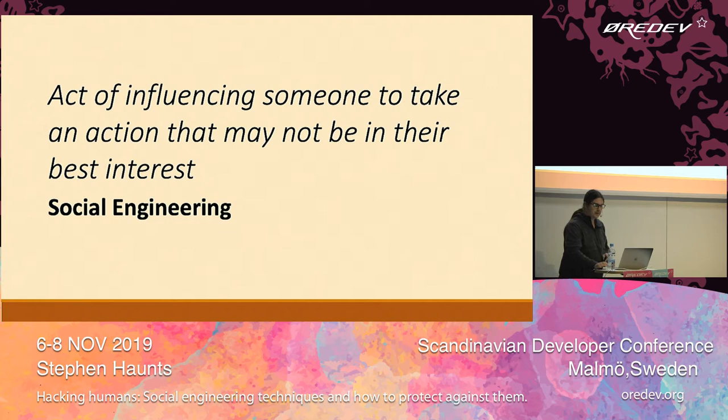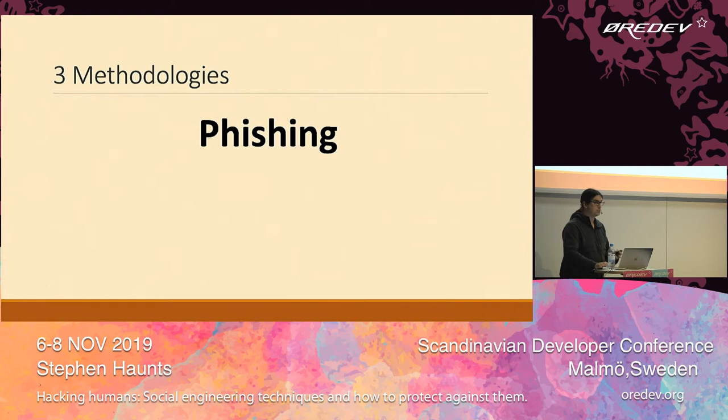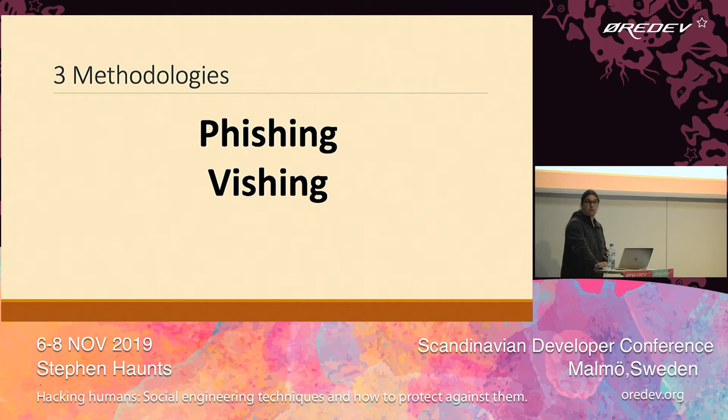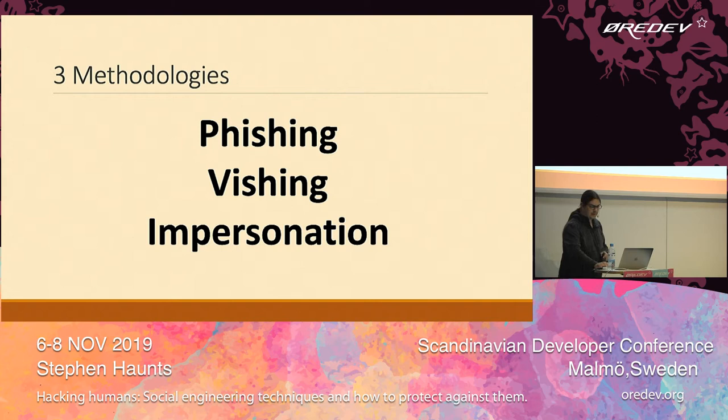There are typically three types of social engineering attack you might encounter. The first is phishing, which is generally an email-based attack. Then we have vishing, which is very similar but based on the telephone — where someone phones you up trying to extort money out of you in some way. And then the final one is impersonation, which is what we're going to spend a lot of our time talking about today.